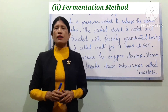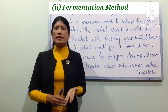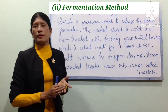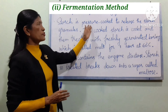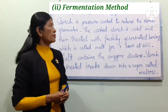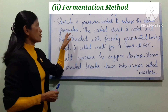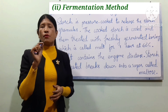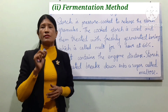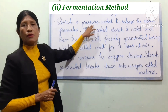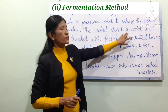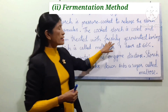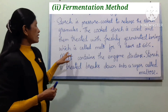Method 2: Fermentation. Step 1 involves starch. We use starch granules, which are very small particles. The starch granules are then treated with freshly germinated barley, which is called malt.